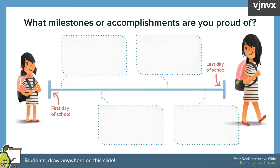In this drawing template, students are prompted to reflect on their accomplishments or any milestones from the entire school year. Students can write, draw, or type in the areas provided in a timeline from the first day of school to the last day of school. You can then display student responses — they would be anonymous — so students can see the similarities and differences in milestones and accomplishments and celebrate each other. You can use the teacher dashboard to view all of these.